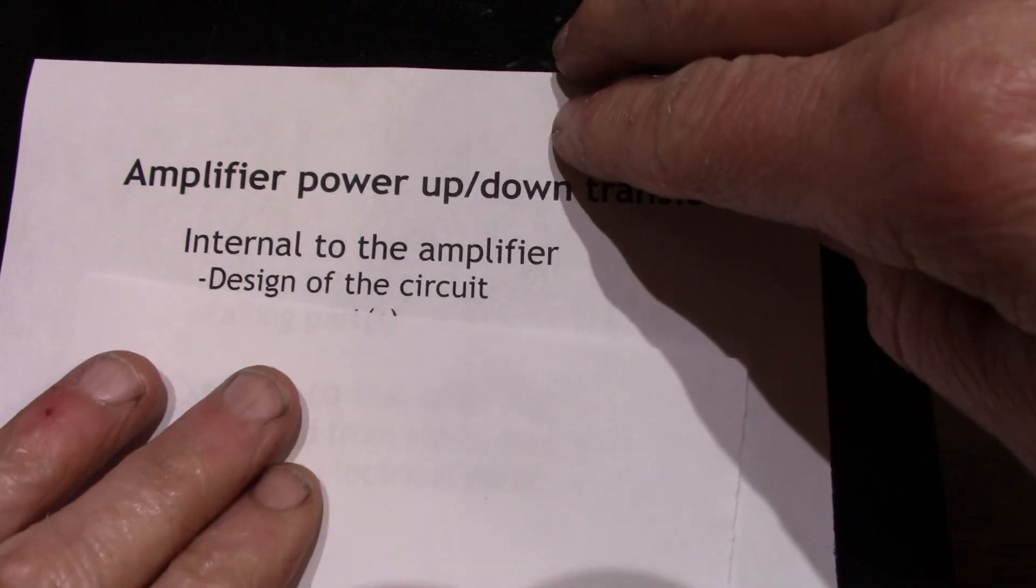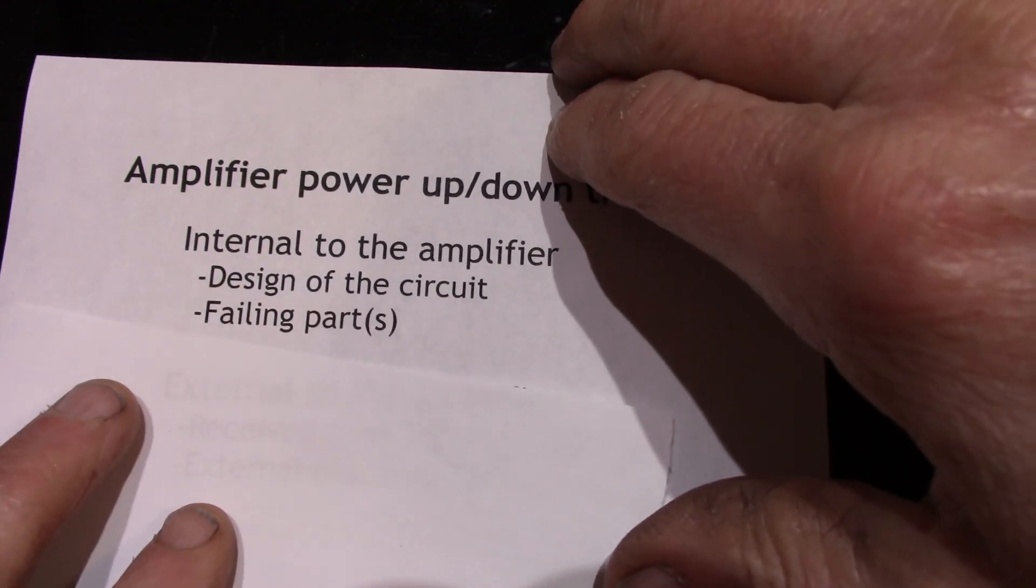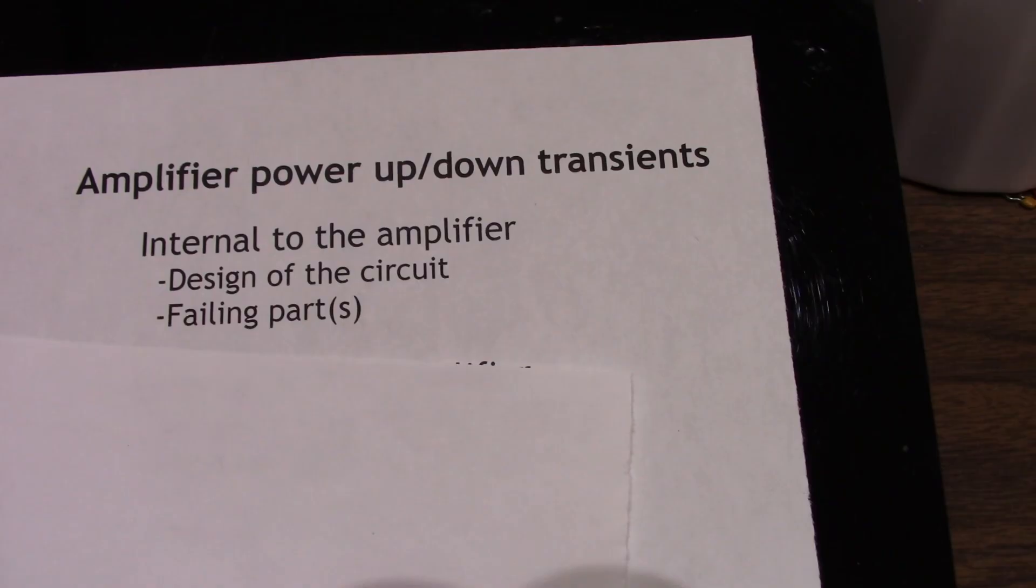Another problem could be failing parts. You might want to check electrolytic capacitors, such as the supply bypass. Those tend to soften the power up and power down and make the transients less noticeable. And if they're failing, you get a faster rate of change of the voltage as the circuit is powered up or down and, of course, a transient from the output.